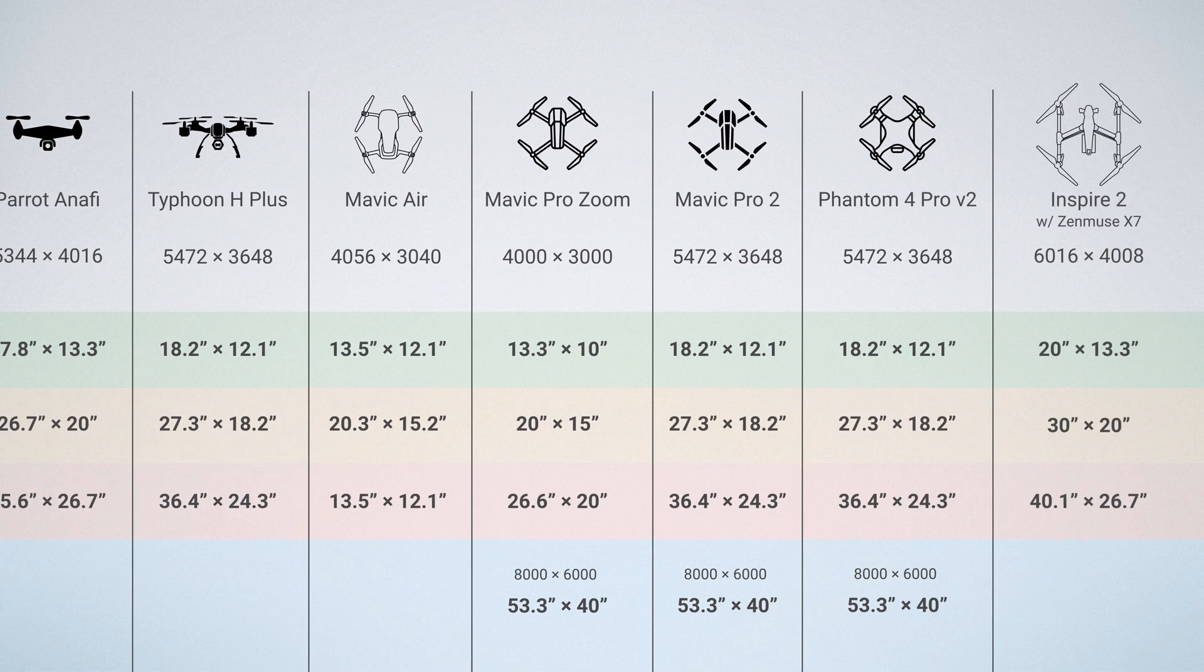You can also consider upgrading to a higher quality drone with a nicer camera. The Inspire 2 with the Zenmuse X7 can already print at 40 inches by 26 inches before using any panorama modes.